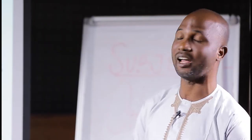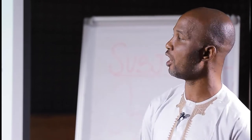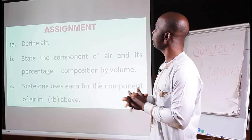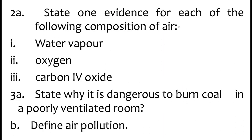As I round up, you will be looking at the Bunsen burner — it is used as an instrument or apparatus in the laboratory where we carry out combustion. Let's look at our assignment for today. First, define air. Second, state the components of air and their percentage composition by volume. Third, state one use each for the components of air. Fourth, state one evidence for each of the following composition of air: water vapor, oxygen, and carbon dioxide. Fifth, state why it is dangerous to burn coal in a poorly ventilated room. And finally, define pollution.